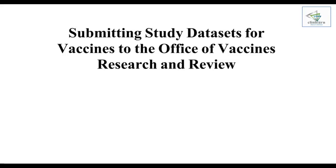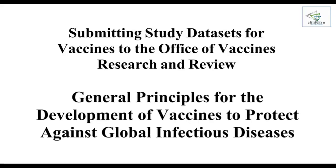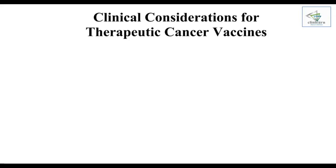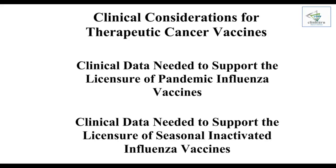The second guideline is regarding the development of vaccines against global infectious disease. This guideline provides context for the medical writer as to how the medical writing deliverables would contribute to the marketing authorization application. The third guidance is specific to therapeutic cancer vaccines, providing details on the patient population, monitoring immune response, biomarkers, efficacy assessment, disease progression, and more. The fourth and fifth guidelines are related to influenza vaccines, providing immunogenicity and safety endpoints and details on the thresholds that a vaccine should achieve — information that is extremely useful for the medical writer.